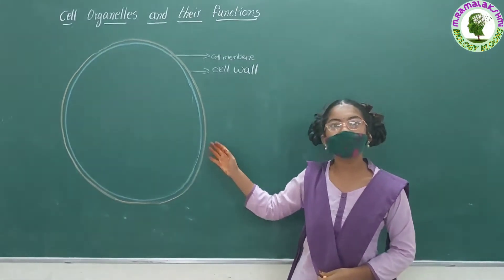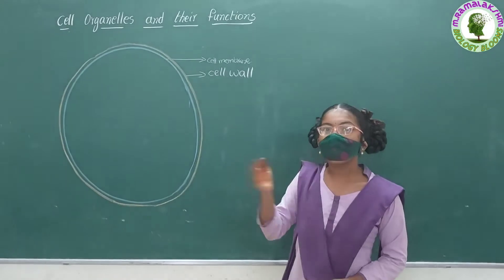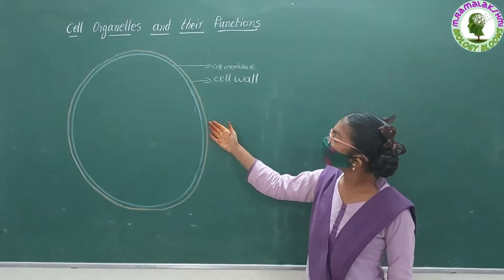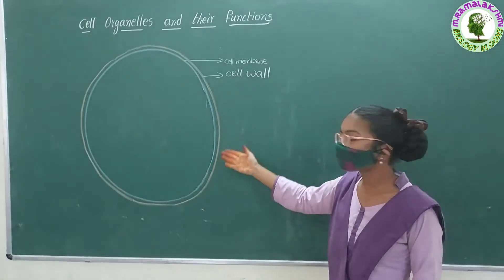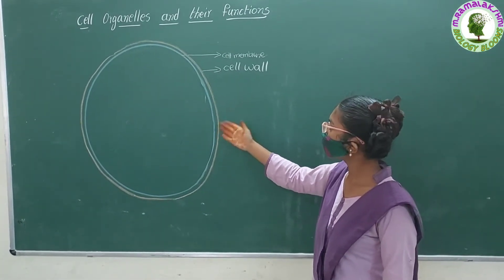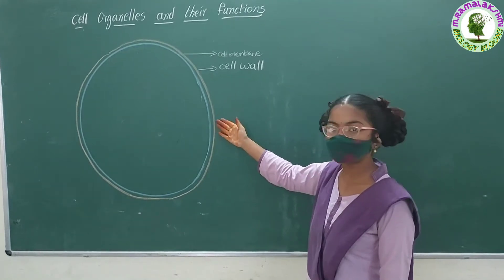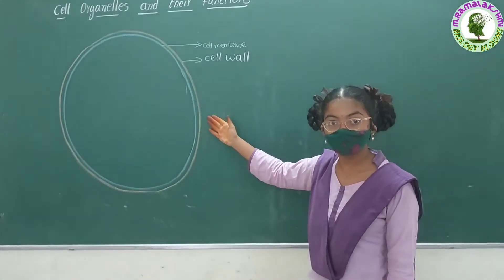I am cell wall. I am only present in plant cells. I am absent in animal cells. I am the layer outside cell membrane. I am a tough but flexible, porous layer that lends a definite shape to the cell for protection. I am made up of mainly cellulose.